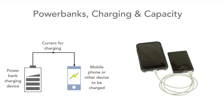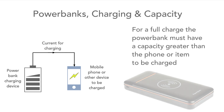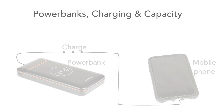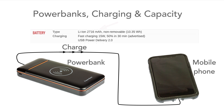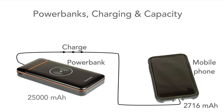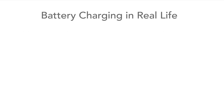Another area where knowing the battery capacity is very useful is when charging mobile phones from power banks. For a full charge, the power bank must have a capacity greater than that of the phone. So for a phone like this, where the specification states that the battery has a capacity of 2716 milliamp hours, and a power bank that states the capacity is 25,000 milliamp hours, then it should be able to provide just over nine charges.